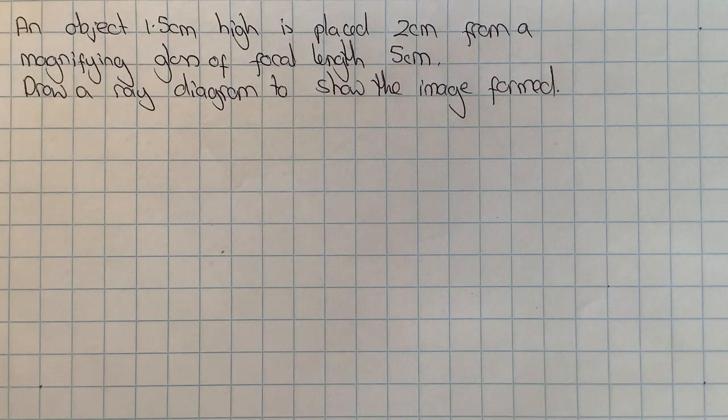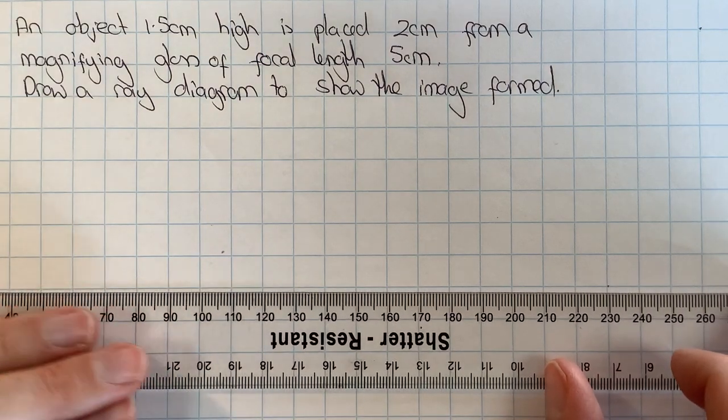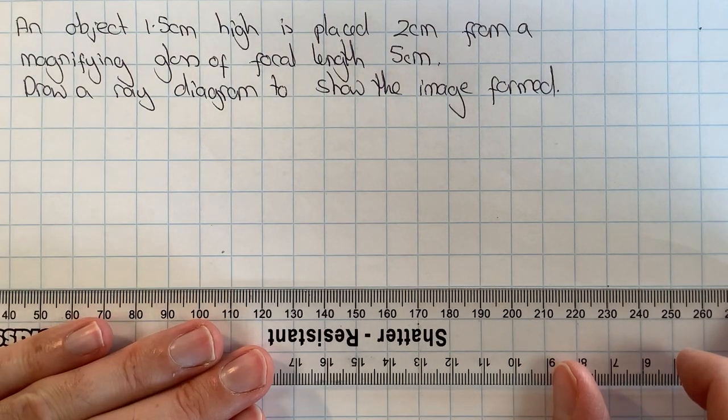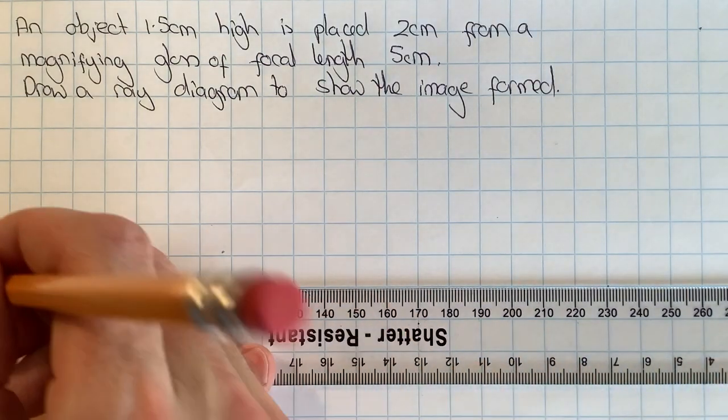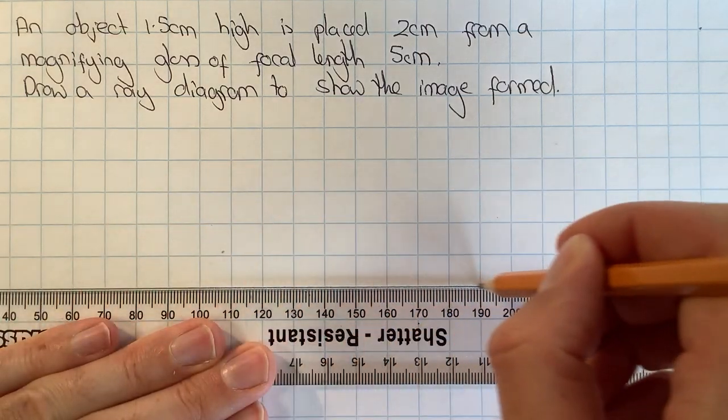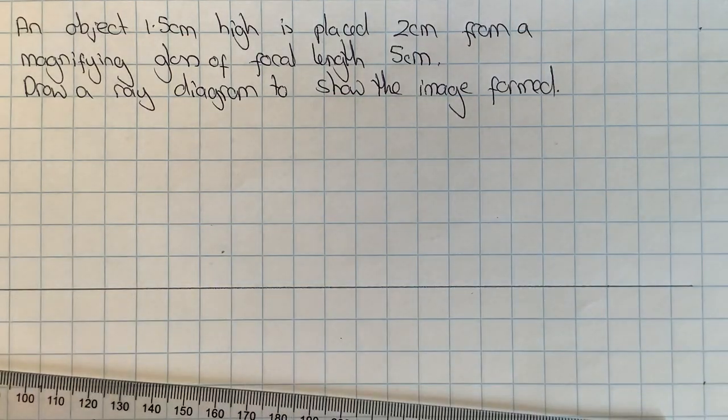The first thing that I'm going to do is draw in the principal axis, which is a horizontal line, and I'm going to do that on top of the squares on the squared paper.